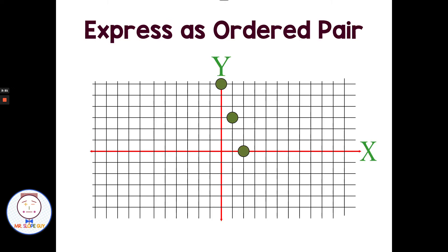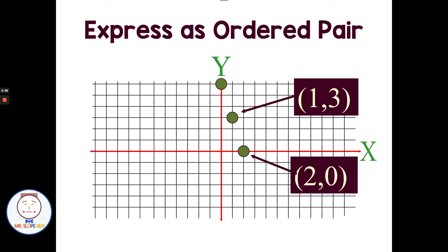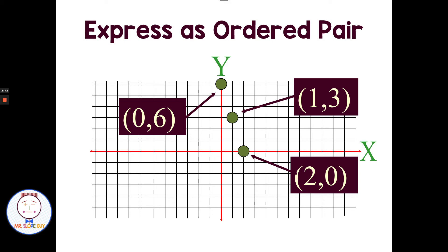We can look at those ordered pairs on a coordinate plane. If we graph those ordered pairs, we're looking at the ordered pairs 2, 0; 1, 3; and 0, 6. So domain is the x values or the first number, and range is the second value or y value. If you do have a value repeat, it's not wrong if you write the number twice, but customarily we would write it one time when listing domain or listing the range.